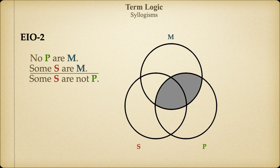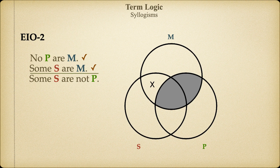The major premise tells us that there are no shared members of P and M, so we've shaded out regions 3 and 4. The minor premise asserts that there's one member of S that's also a member of M, so we've placed an X in region 2. We've now demonstrated what is asserted in the premises. Is there at least one S that is not a member of P? We see that there is, so this argument is also valid. The form of an EIO-2 argument will always be valid.